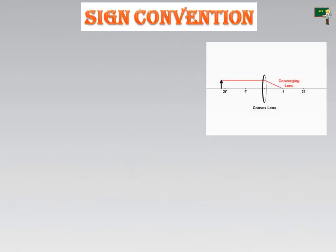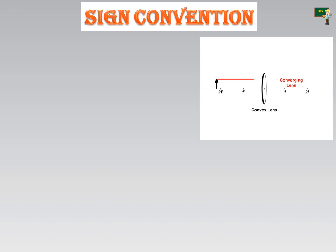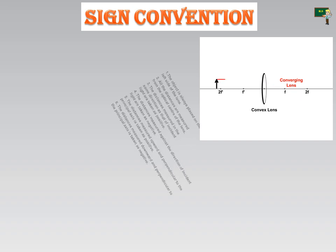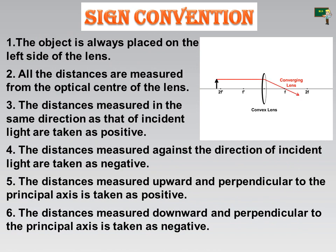Let's see the important topic: sign convention. In the short video, you can see the converging lens — that means the convex lens is used to converge the light ray. The first point is that the object is placed on the left side of the lens, as you can see here. All the distances are measured from the optical center of the lens.